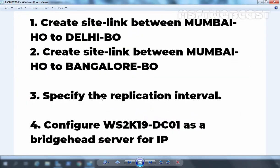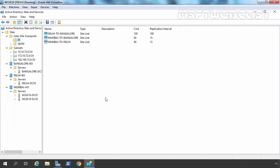We have successfully configured the first two steps and the third one is also completed — we have changed the replication interval as well. Now we are going for the fourth step: configuring ws2k19-dc01 as a bridgehead server. You need to configure a bridgehead server in cases where you have multiple domain controllers in the same Active Directory site. For Bengaluru and Delhi it is not necessary since those sites each have only one domain controller, which will automatically act as the bridgehead server.